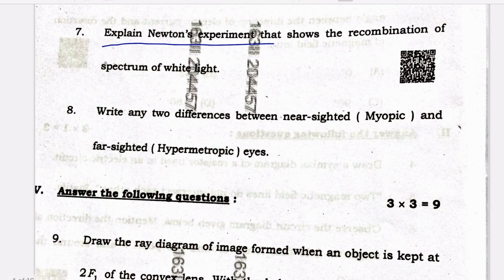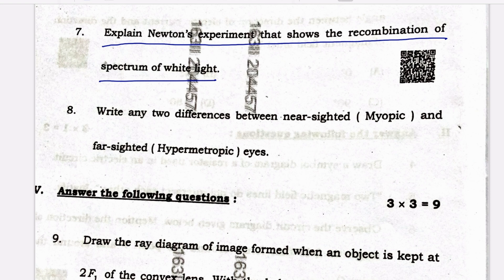Question: explain Newton's experiment that shows the recombination of the spectrum of white light. Isaac Newton was the first to use a glass prism to obtain the solar spectrum. He tried to split the colors of the spectrum further using another similar prism but did not get any more colors. He then placed a second identical prism in an inverted position with respect to the first one. The colors of the spectrum passed through the second prism and emerged as a beam of white light. Thus Newton proposed that sunlight is made up of seven colors. You can also include a diagram here.